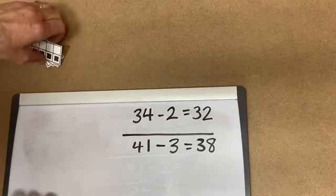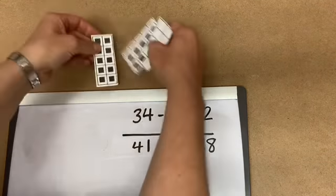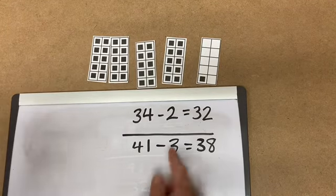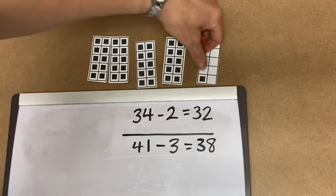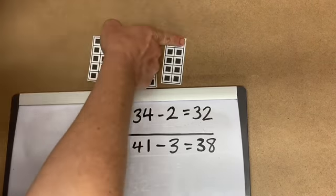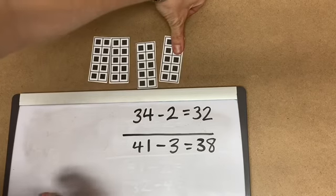For an example, like 41 take away 3. 10, 20, 30, 41, and we take away 3. Now we're crossing the 10s. So we take away 1, leaving us 40. We take away another 1, leaving us 39, and we take away another 1, leaving us 38.